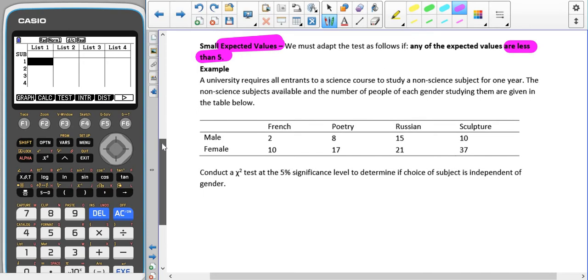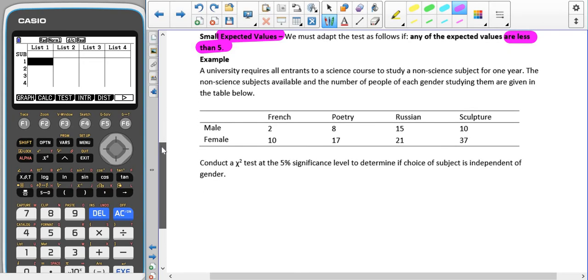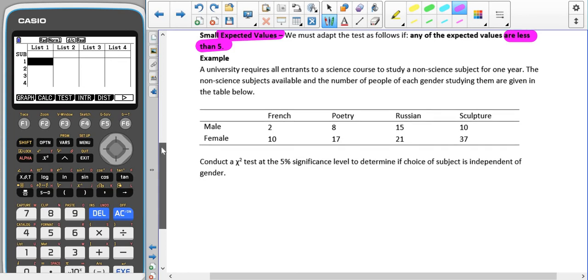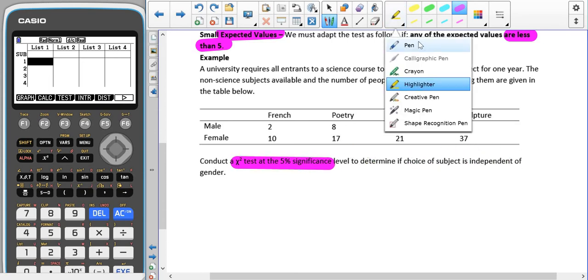Here we have a university requires all entrants to a science course to study a non-science subject for one year. The non-science subjects available and the number of people of each gender studying them are given in the table below. We're trying to conduct a chi-squared test at a 5% significance level to see if they are independent, if the subject is independent of the gender.